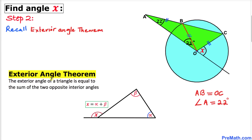Now let's recall the exterior angle theorem: the exterior angle of a triangle is equal to the sum of the two opposite interior angles. In our case, angle X is our exterior angle and it equals the sum of the two opposite interior angles alpha and beta. So X equals alpha plus beta.